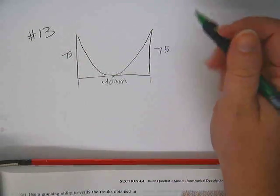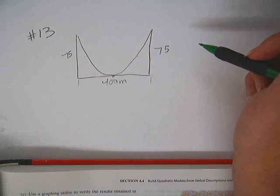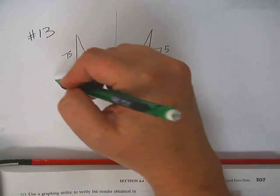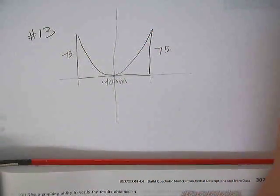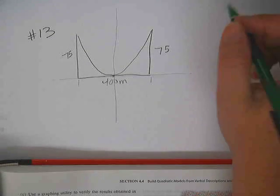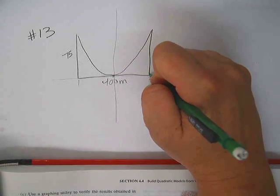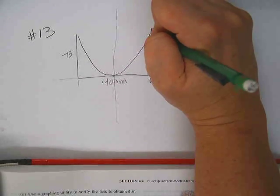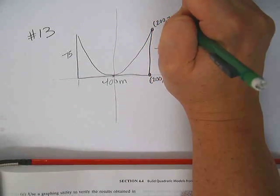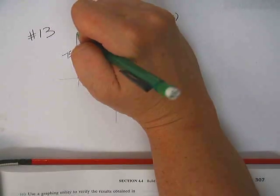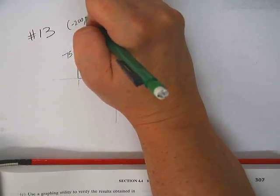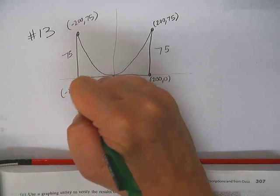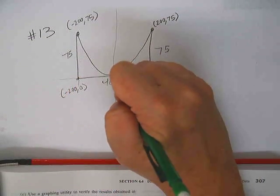So this entire thing is 400. So if we were to place our own graph, our own x-y graph for this, which is the best way to do this problem, the best place to put it would be to put the vertex at 0, 0. Don't you agree? Yes. So if the vertex is at 0, 0, then that point right there would be at 200, 0. This point right here would be at 275. This point right here would be at negative 275. And this point here would be at negative 200, 0.